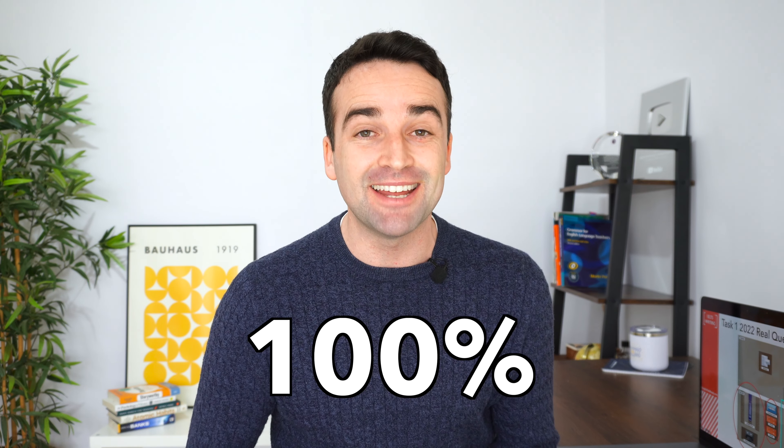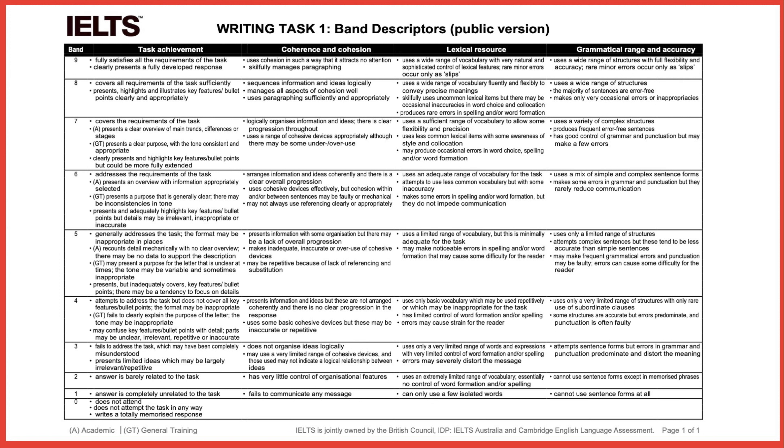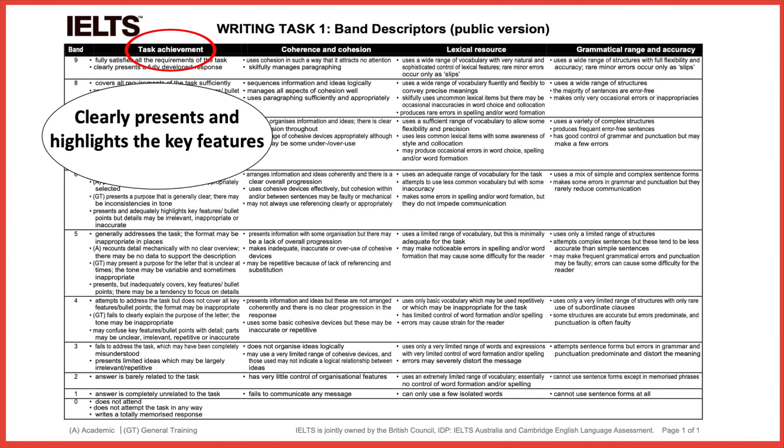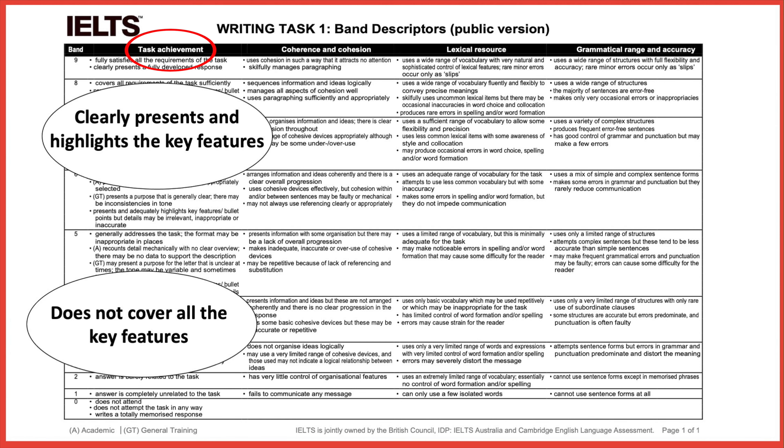So that's step one — identifying the main features, basically planning before you write. You might ask: is it essential to do all this planning before you begin writing? And the answer is yes, totally 100% essential. Because on the IELTS criteria, it says you have to be able to identify the main points. Looking at the scoring criteria for writing task 1: at a band 7, it says the student clearly presents and highlights the key features, whereas at band 4 it says does not cover all of the key features. To get a band 7, you need to identify and write about all of the key features. Even though 20 minutes is not that long, you should take your time with the planning — it will make sure you cover all key features and easily write more than 150 words.